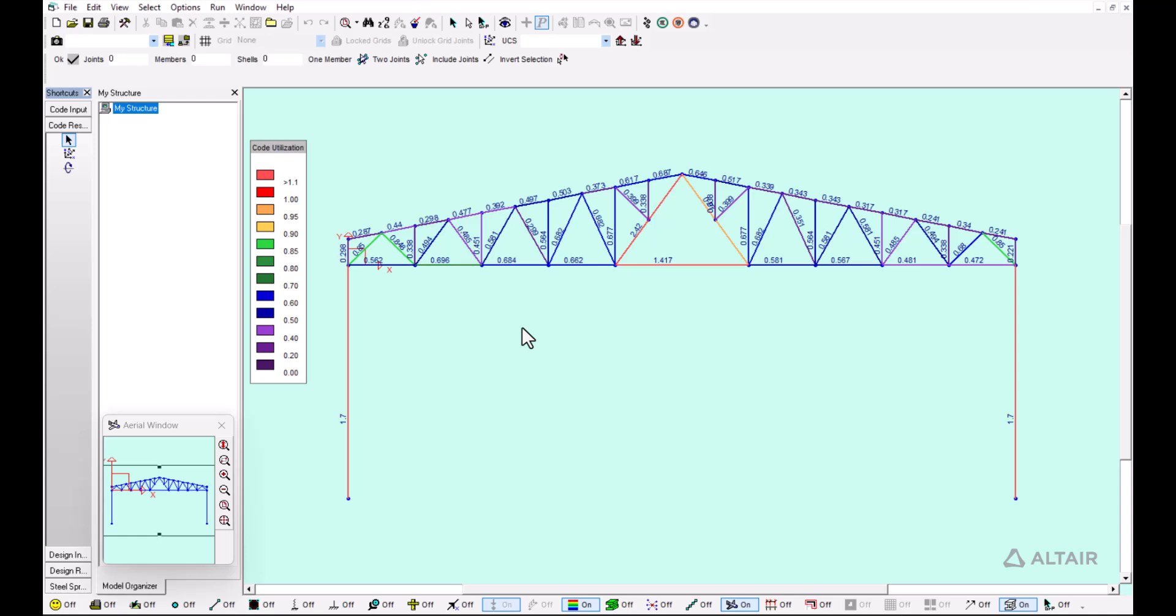But we can also notice that some of the members that we did not check manually have a very high utilization ratio. These two web members in the middle have a 2.45 and a 1.4 utilization ratio. This is something that by hand would take us a lot of time to check. What we can do now with S-Frame is to optimize the rest of the members, these two members that are not passing the code check. S-Frame allows us to verify what we did with our hand calculations and also accelerate our design process.